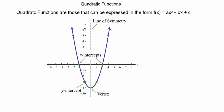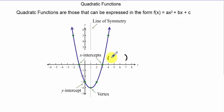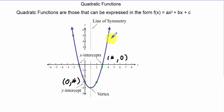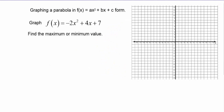Today we'll talk about quadratic functions. Quadratic functions basically make parabolas; the most basic form looks like ax² + bx + c. We've already factored things like this before. There are certain important points on these parabolas: the x-intercepts where the function crosses the x-axis, a y-intercept, a vertex which a line of symmetry passes through, and all the other points on the parabola.